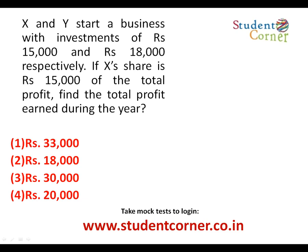Writing the structure: X has a capital share of fifteen thousand rupees invested for twelve months, and Y has eighteen thousand rupees invested for twelve months. The common factor twelve and thousands cancel out, leaving three fives to three sixes, so the ratio is five is to six. This is the profit share ratio.